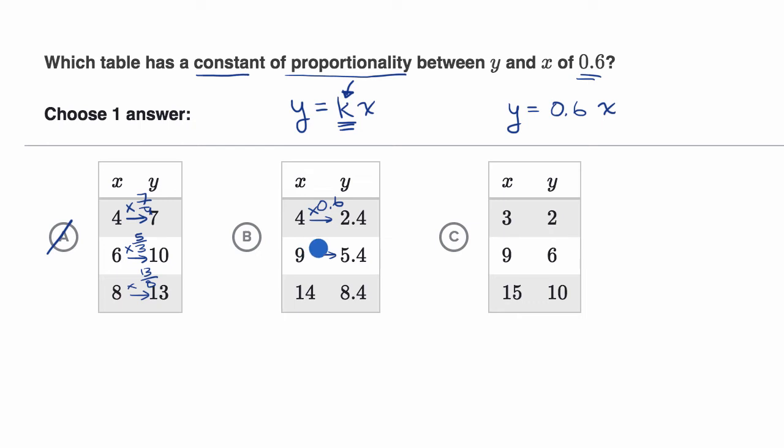So let's see, nine times 0.6, yeah, that is 5.4. Nine times six is 54, but now this is nine times 6 tenths. It's 54 divided by 10, which is 5.4. And let's see,